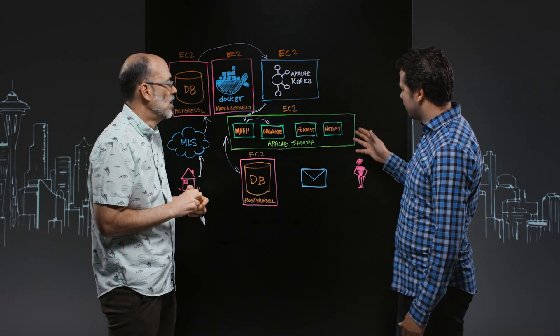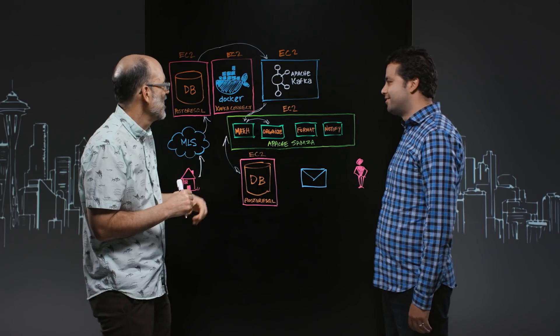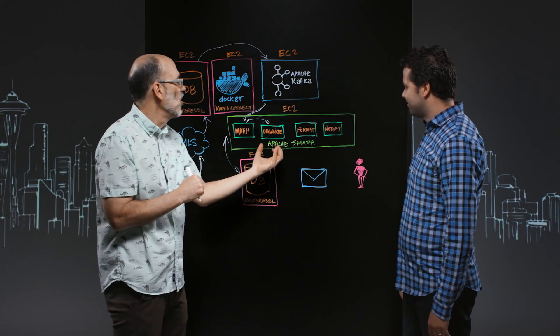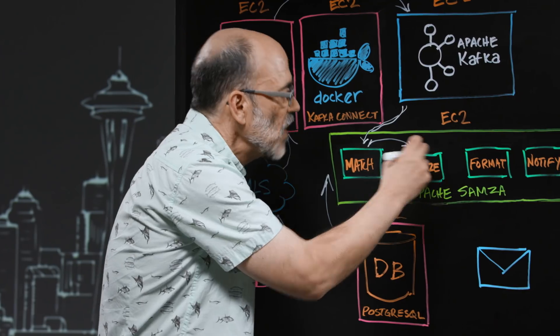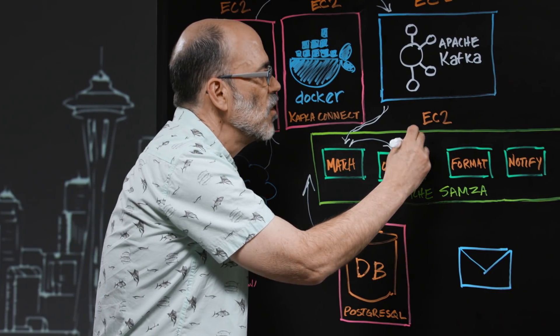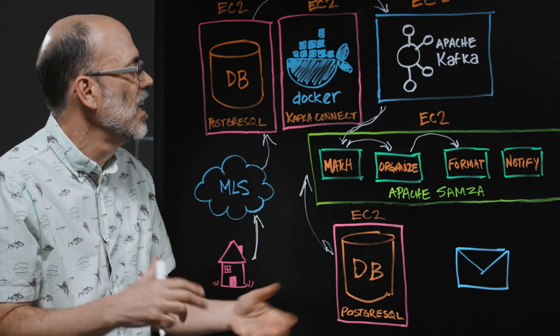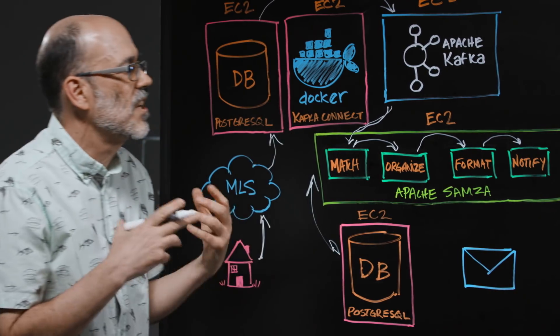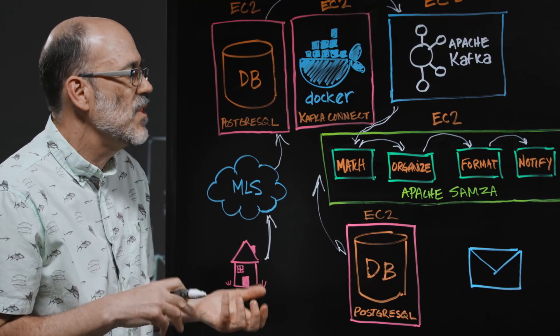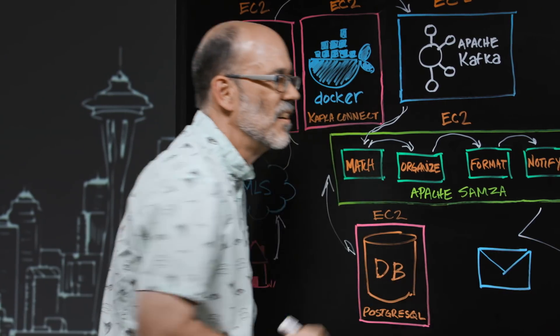What happens afterward? I feel like we're getting closer to the notification. We're getting closer to the end. Once we've organized the data and we know it's time to tell someone, we publish to a Kafka topic which gets picked up by a formatter, which turns it into a nice HTML format, makes it pretty. Once it's done that, it sends it off to a notify step which connects to an SMTP service to actually send the email to our customer.